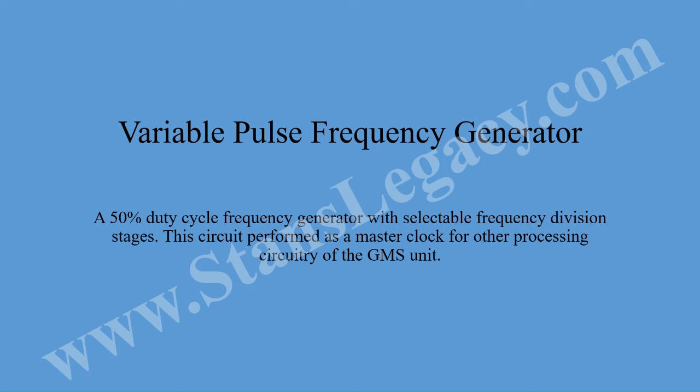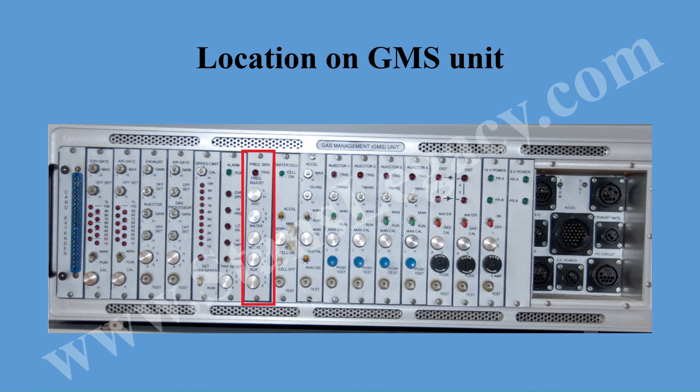We're going to look at the variable pulse frequency generator. The circuit was a 50% duty cycle generator. The 50% came from different stages of divide-by-10 ICs. Selectability was performed by rotary switches and the circuit is effectively being used as a master clock — similar to modern computers — for the other processing circuitry on the GMS unit. We can see from the interface plate that we have frequency selection switches for the water, which is actually the gated pulse frequency generator, distributor, and accelerator, and then there's an auxiliary.